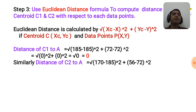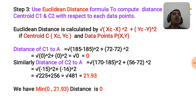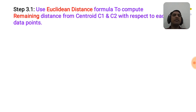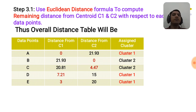Similarly, the distance of c2 to data point A is the square root of (170 minus 185) squared plus (56 minus 72) squared, which equals 21.93. Since c1 is at (185, 72) and c2 is at (170, 56), and data point A is at (185, 72), the minimum distance is 0. So data point A is assigned to cluster c1. We compute remaining distances similarly and the overall distance table is shown here.